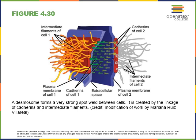Desmosomes are a type of cell junction that anchors the intermediate filaments of the cytoskeleton of two adjacent cells together. Proteins called cadherins cross the plasma membrane of two adjacent cells and bind to one another. On the intracellular side, the desmosome binds to the intermediate filaments, so the cytoskeleton of two adjacent cells is anchored together, creating a strong linkage between them.